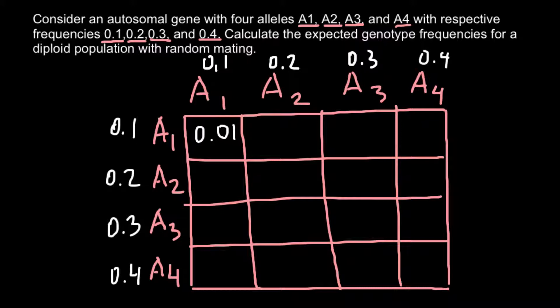If we multiply the frequency of the allele A2, that is 0.2, by the frequency of the allele A1, this is the combination A1A2, and the answer would be 0.02.